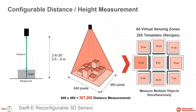Time-of-flight is not new — it is already used in ultrasonic and laser measurement — but unlike reflecting a single signal off of an object, SWIFT-E measures over 300,000 distances in its field of view. Now a controller doesn't know what to do with over 300,000 measurements, so we let you define up to 64 virtual sensing zones. Within each zone, SWIFT-E will typically make a few thousand measurements and provide the average height or distance within that zone to the controller.